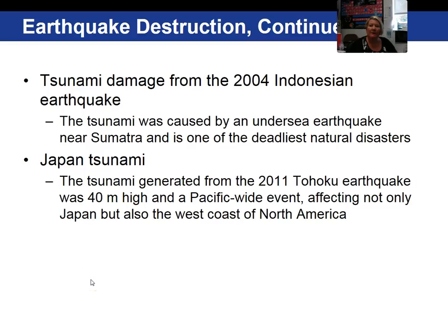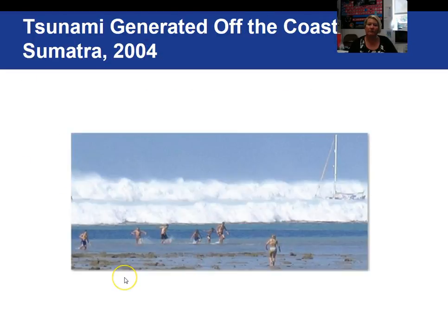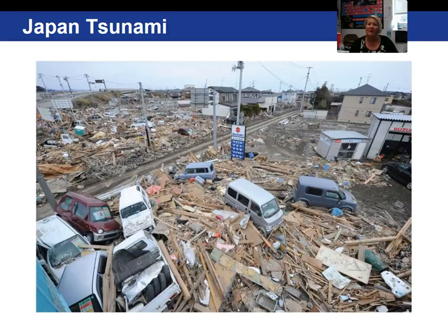An extremely devastating tsunami occurred in 2004 in Indonesia from a magnitude 9.1 earthquake, killing 230,000 people. In 2011, the Japanese tsunami struck the coast and caused their nuclear power plant to melt. The greatest damage from the Japanese earthquake was from the tsunami, not from the ground shaking, and approximately 16,000 people died. Here is a picture of the 2004 Indonesian tsunami coming onto shore and an image of the 2011 tsunami damage in Japan.